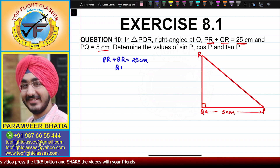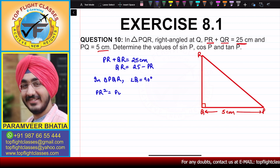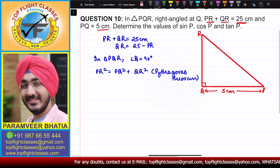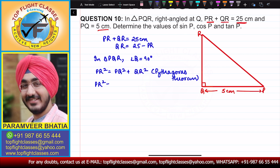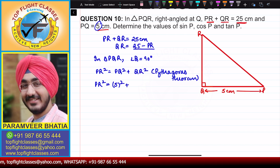From this, QR is equal to 25 minus PR. Now, in triangle PQR, angle Q is equal to 90 degrees, so by the Pythagorean theorem, PR squared is equal to PQ squared plus QR squared. PQ is given as 5 cm, so we write: PR squared equals 5 squared plus QR squared, where QR equals 25 minus PR.